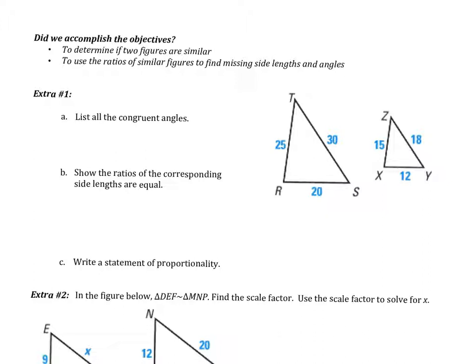We've accomplished both objectives: determining if figures are similar, and using ratios to find missing side lengths and angles. For homework, complete example number one. If you're not sure what to do, look back at the previous examples. Good luck!